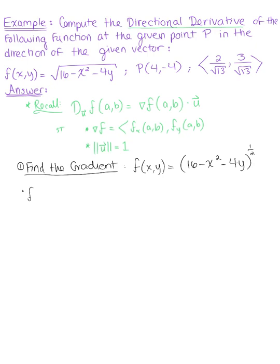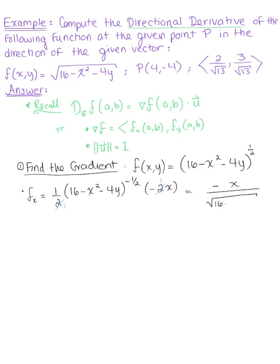The partial derivative with respect to x is equal to 1/2 multiplied by (16 - x² - 4y)^(-1/2), multiplied by the derivative of the inside with respect to x, which is -2x. The two's cancel each other out, leaving us with -x all divided by √(16 - x² - 4y).